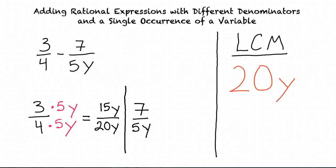Okay, now to make the second fraction have a denominator of 20y, we need to multiply the denominator by 4. And in order to keep the value of this fraction the same, we also need to multiply the numerator by 4. Now we see that our second fraction can be rewritten as 28 over 20y.